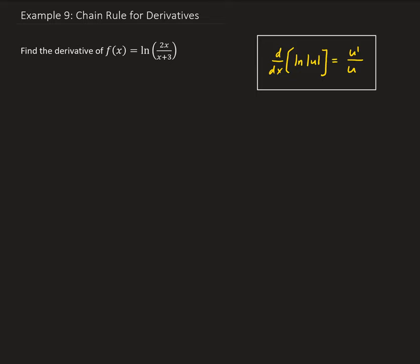We can simplify it by using one of the properties for natural log. Recall that if we have the natural log of a over b, this is the natural log of a minus the natural log of b.